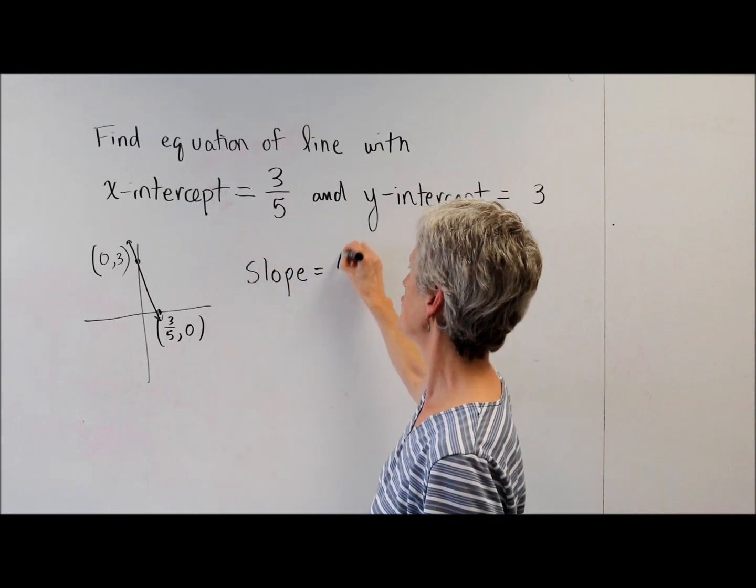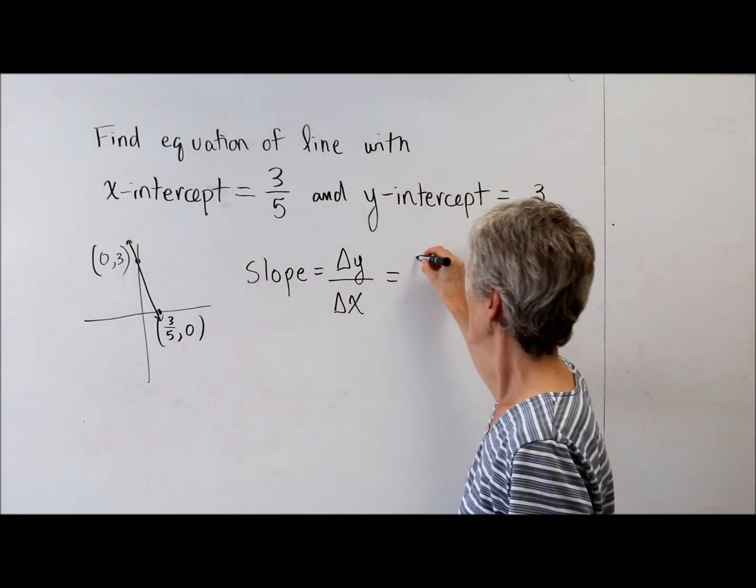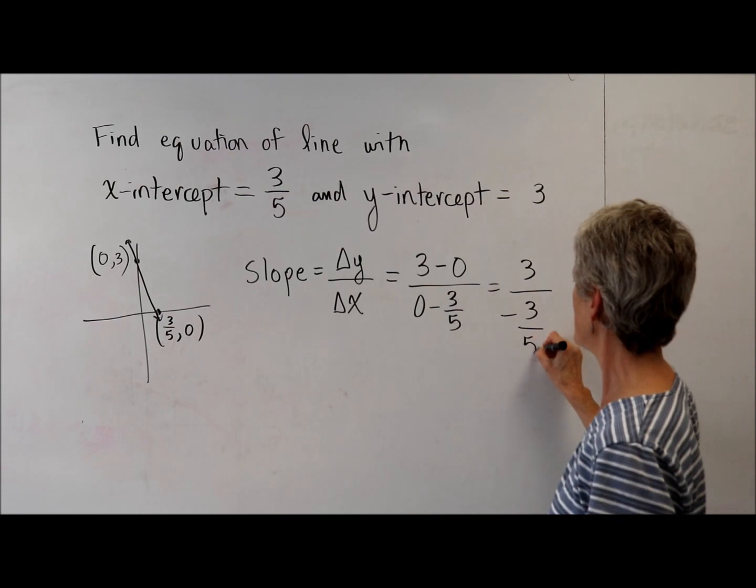So, slope, of course, as we know, is the change in my y over the change in my x. So, my change in y is 3 minus 0. Could I do 0 minus 3 if I wanted to? Sure. As long as you're consistent. As long as I'm consistent. You got it. So, if I'm doing 3 minus 0, I have to do 0 minus 3/5. All right, that gives me 3 over negative 3/5.